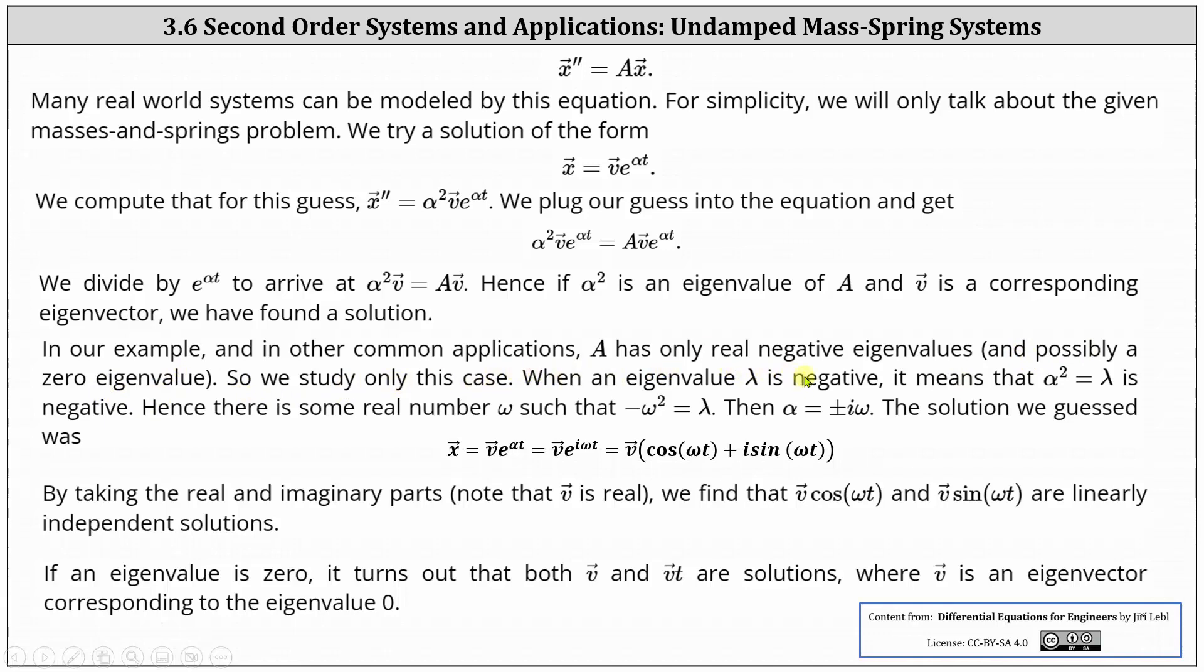When an eigenvalue lambda is negative, it means that alpha squared equals lambda is negative. Hence, there is some real number omega such that negative omega squared equals lambda and therefore alpha equals plus or minus i omega.